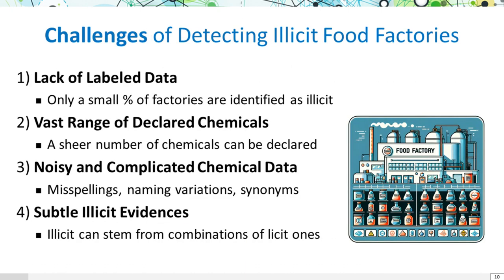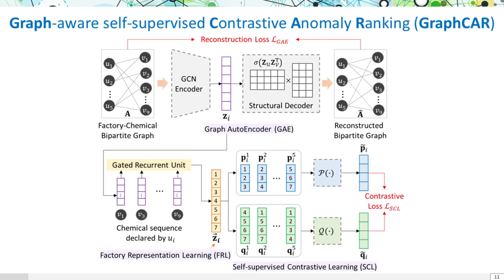We face big hurdles in detection: scarce data on violators, a vast array of reported chemicals, error-filled and inconsistent data, and subtle signs of illegal activities hidden among legal ones. We've developed GraphCar. GraphCar maps food factories and their chemical declarations into a bipartite graph, processed by a graph autoencoder to understand hidden patterns. It uses self-supervised contrastive learning on factory representations to spot unusual patterns, effectively highlighting factories likely engaging in illicit activities by focusing on deviations in chemical usage.